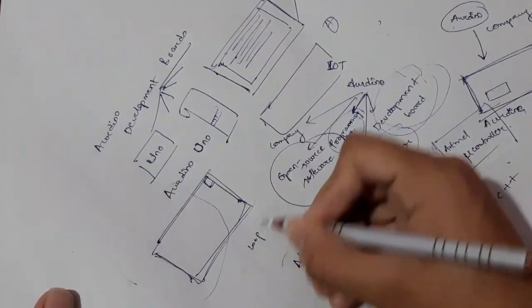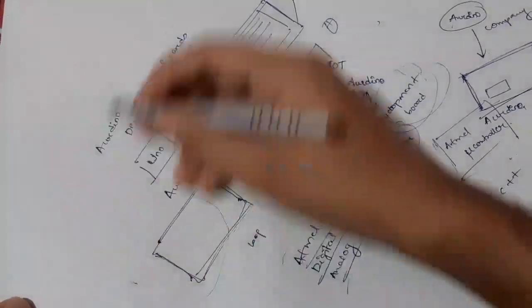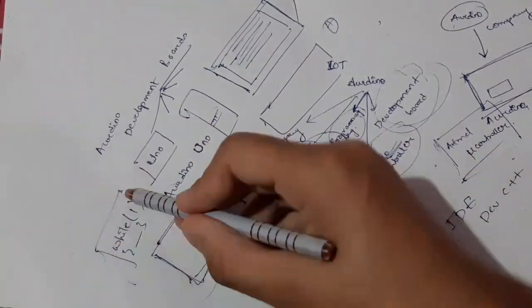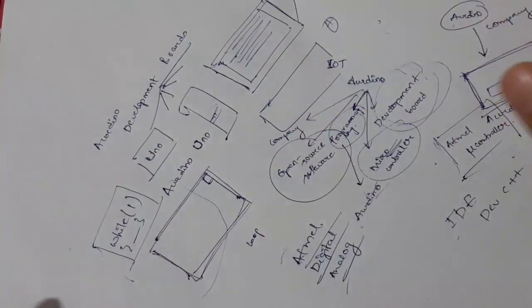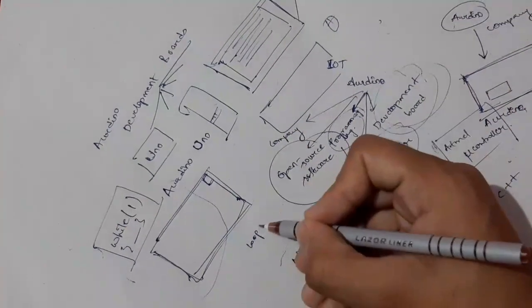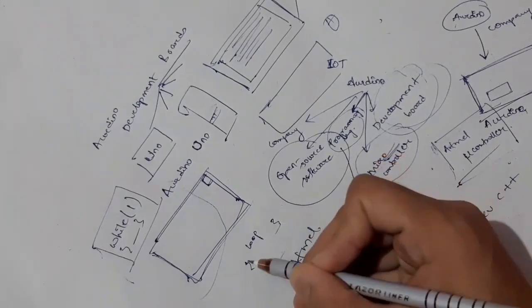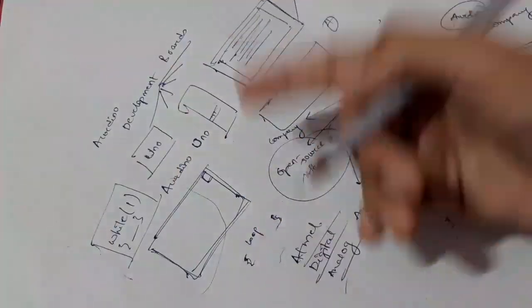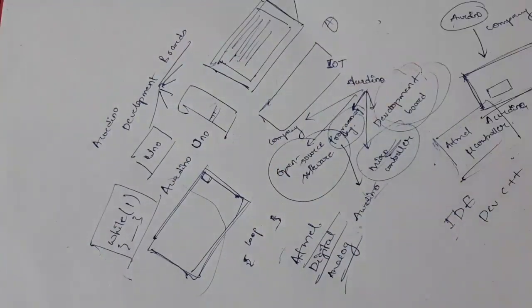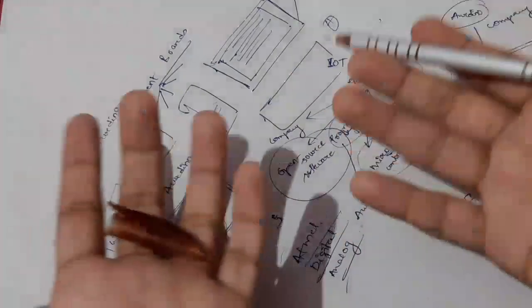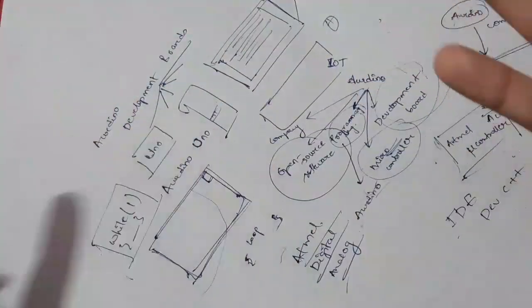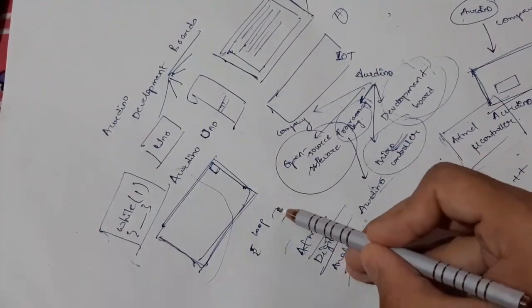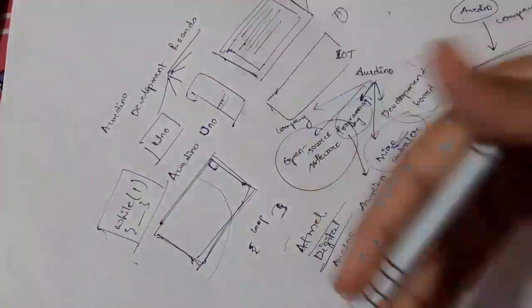The loop function works like a while(1) in C language — it runs infinitely until you terminate the program. In real-world scenarios, embedded systems need to run code continuously. Robots and embedded systems run the same code infinitely in a loop, which is why loop is the main execution function in Arduino.